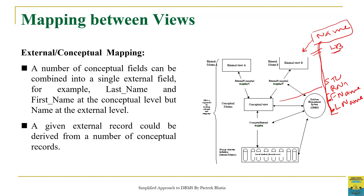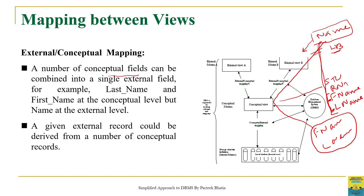For the external view it refers to 'name', but for the conceptual view it refers to a combination of first name and last name. This first name and last name are concatenated to provide the name information at the external level. So you can see that a number of conceptual fields can be combined into a single external field — here the single external field is 'name', created by combining both first name and last name of the student.